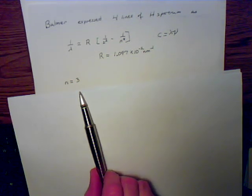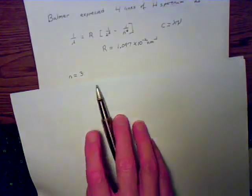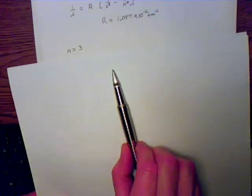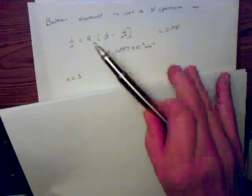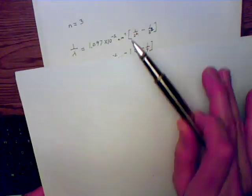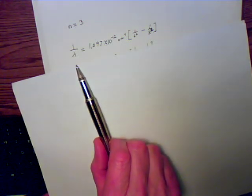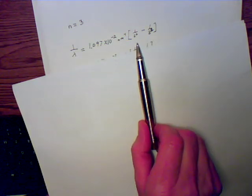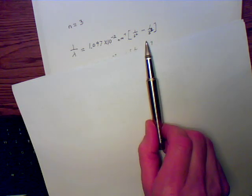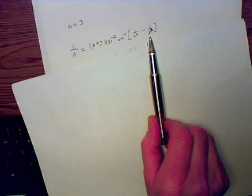For our problem we're looking at the specific case where n is going to equal 3, and so you plug that into the Rydberg equation where 1 over lambda is equal to Rydberg constant times 1 over 2 squared times 1 over 3 squared.